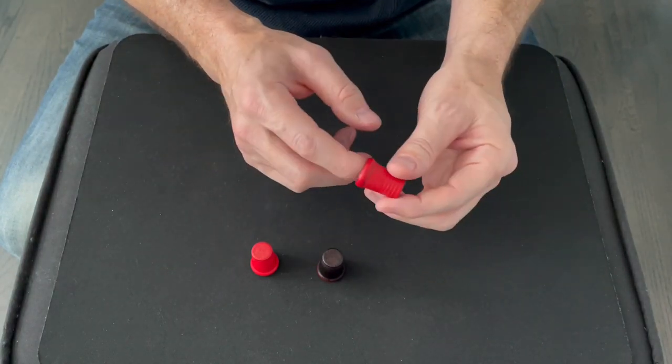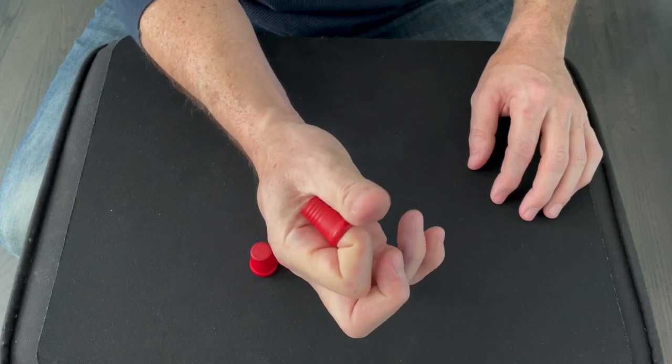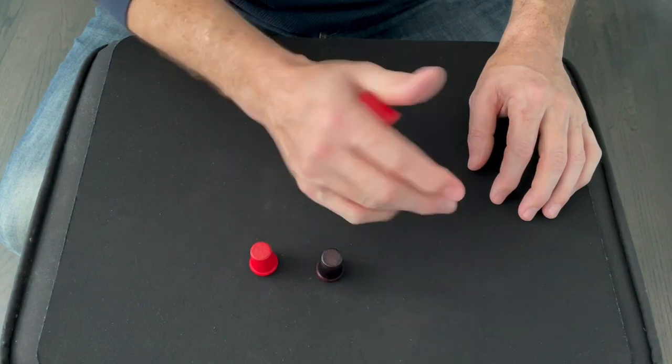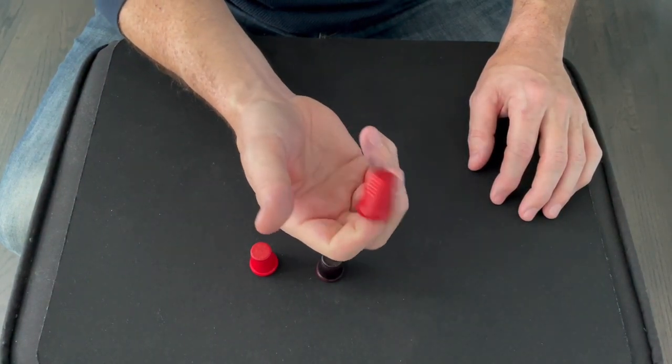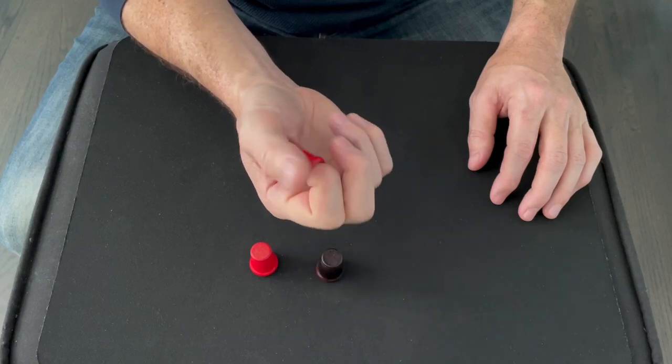There's really one move that you have to master in order to do thimble magic, and that's the thumb palm. Essentially, you're just gripping the thimble between the bottom of your thumb and the base of your hand, and then putting it back onto your index finger. Practice putting it in and out of thumb palm until you're super comfortable with this.